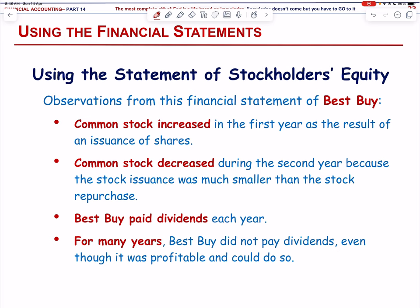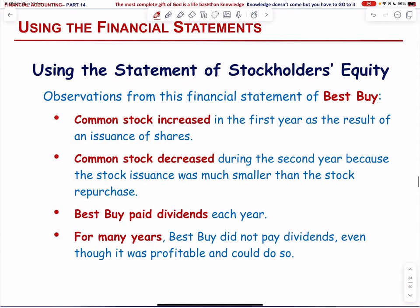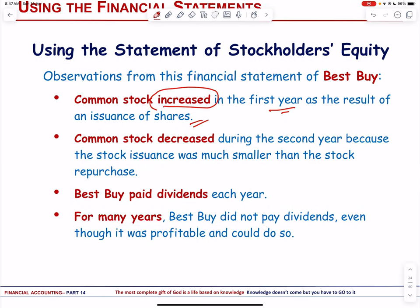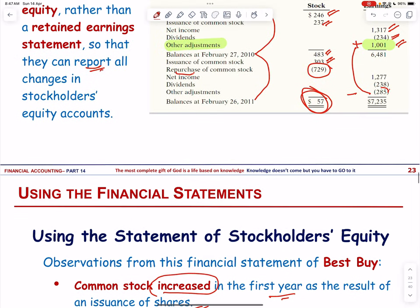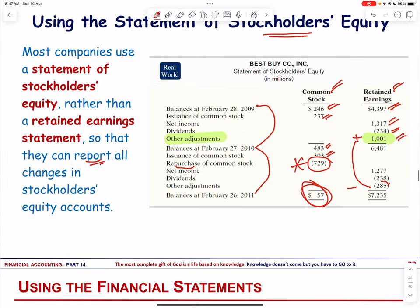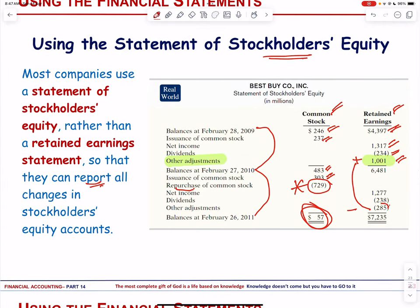From the statement of stockholders' equity, we can conclude that common stock increased in the first year due to the issuance of shares, then decreased in the second year because issued stock was smaller and the company repurchased a large amount of common stock. The company paid dividends each year. These are some of the interesting observations one can draw from the statement of stockholders' equity.